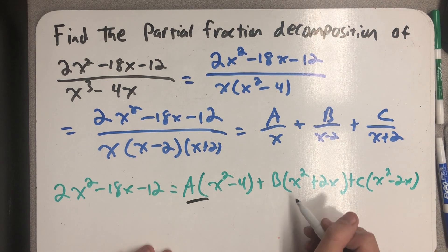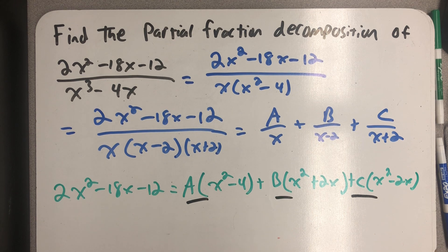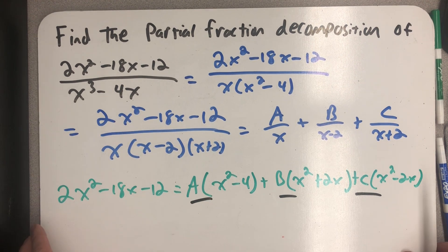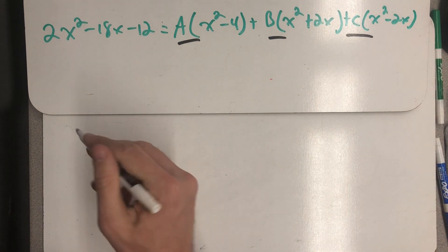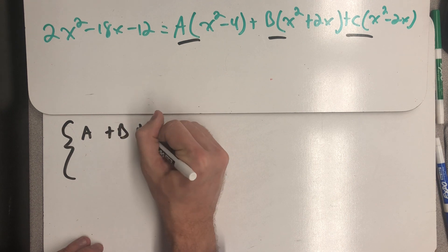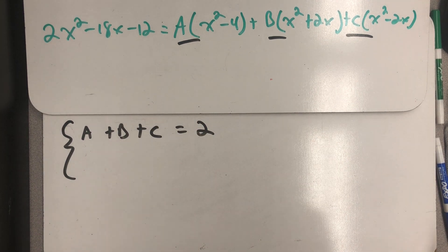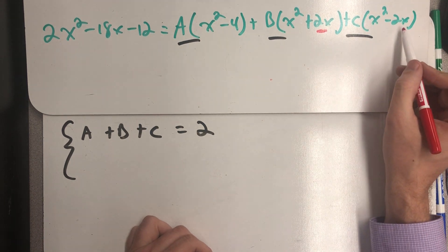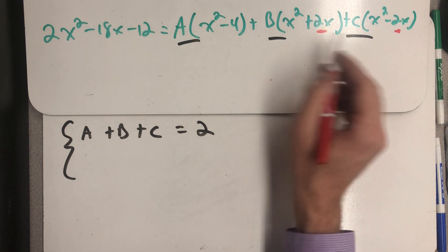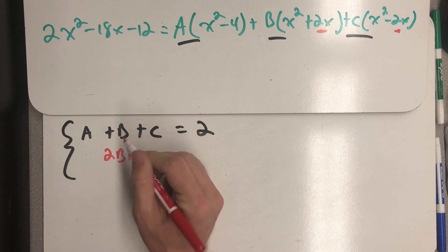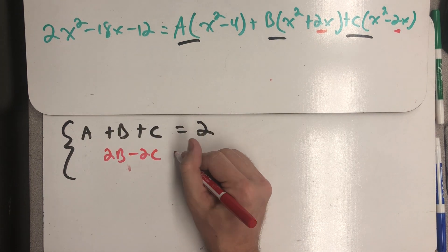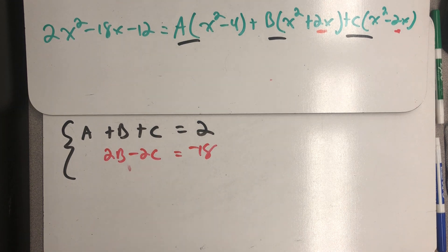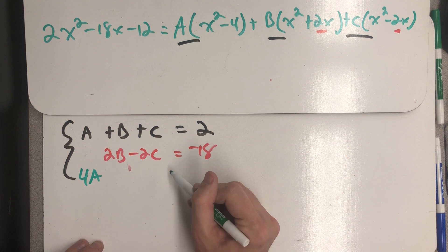Well looking at this statement I see 1, 2, 3 terms that when I distribute would have an x squared. So A x squared plus B x squared plus C x squared would be equal to 2x squared. So that would tell me that A plus B plus C is equal to 2. If I look where I would have terms with x to the first well I'd get one here and one here and that's it. So I'd have no A's but 2B's minus 2C's and they would have to be equal to minus 18. Then finally I need to look where I would have a constant term and I'm only going to have one of those and that would be 4 times A and that's going to have to be minus 12.